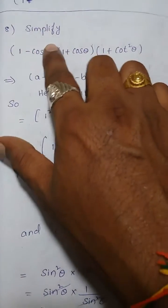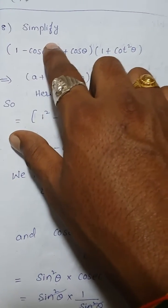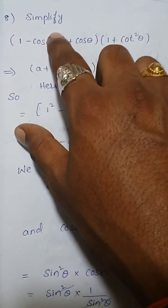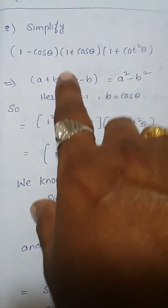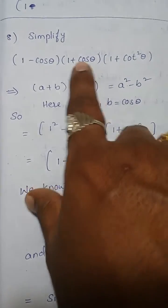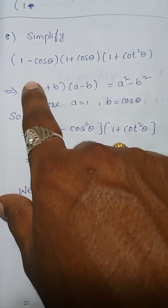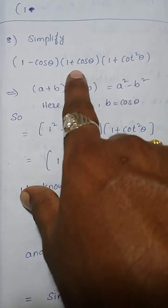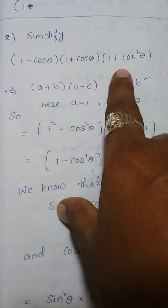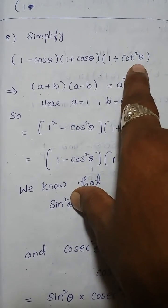Question number 8, page number 292, exercise number 11.4, trigonometry. Simplify: (1 minus cos theta) into (1 plus cos theta) into (1 plus cot square theta).